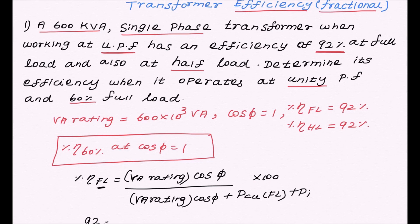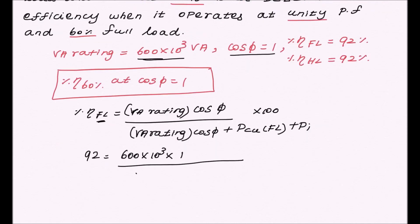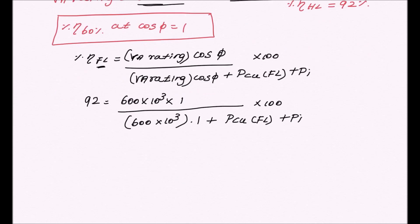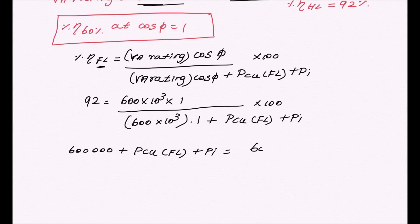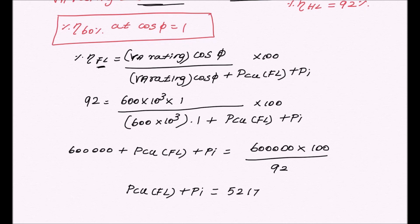Substituting: 92 = (600 × 10³ × 1) divided by (600 × 10³ × 1 + full load copper loss + iron loss) × 100. From this, 600 × 10³ + full load copper loss + iron loss = 600 × 10³ × 100 / 92. Solving this equation gives: full load copper loss + iron loss = 52,173.913. Mark this as equation number 1.